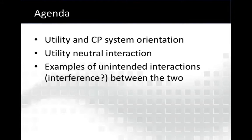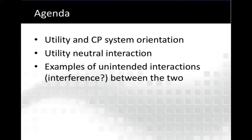The systems we'll cover today would be utility systems, CP orientation, the utility neutral — which is a key part of the story of how those systems interact because it is grounded — and some examples of unintended interactions. We could use the term interference, but it's not classical interference; we will treat it as such, between the two systems.